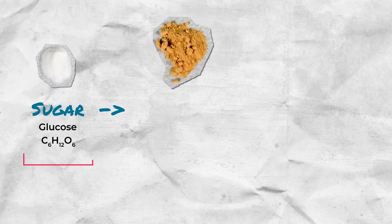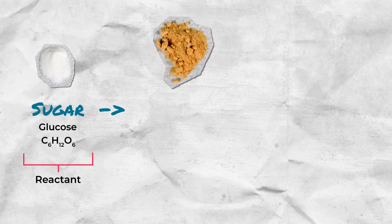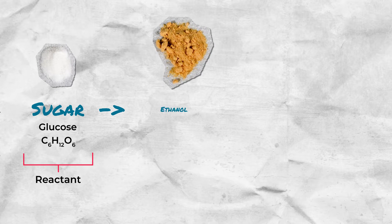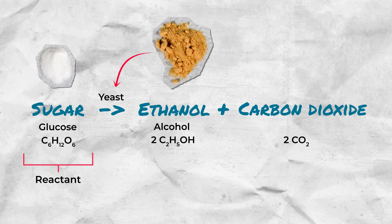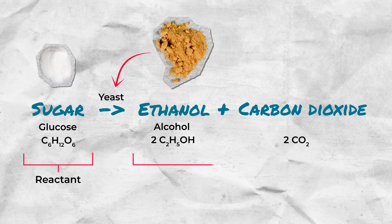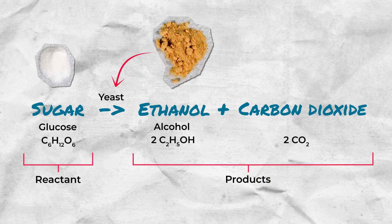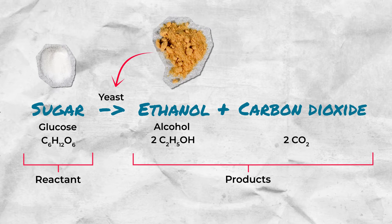The equation for the breakdown of sugar by yeast can be shown as this. On the left side of your arrow, you have the reactant: sugar. On the right side of your arrow, you have two things produced: ethanol and carbon dioxide. Yeast is on top of your arrow because yeast is causing the breakdown of sugar into ethanol and carbon dioxide. In this lab, we're going to be focused on the production of carbon dioxide, which is an atmospheric gas.